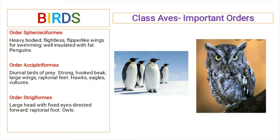Order Sphenisciformes includes birds that have heavy bodies. These are flightless and their wings are modified to flipper-like structures that are adapted for swimming. They have the body well insulated with fat. It includes penguins.